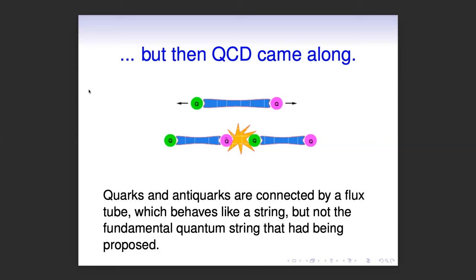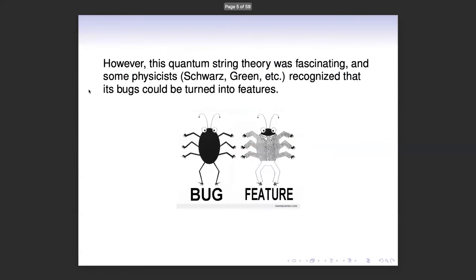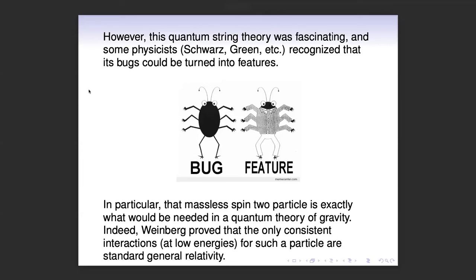QCD was clearly the right theory to describe everything coming out of these accelerators, and so I think most of the field said okay, great, we'll just move along. But a few people said, wait a second — did you say you've got a massless spin-2 particle coming out of your quantum theory? And yes, Veneziano had a massless spin-2 particle coming out of his quantum theory. That's really, really exciting for people who are paying attention, because even by the 1960s, quantum gravity had been recognized for decades as a really interesting, difficult problem that nobody had any idea how to solve.